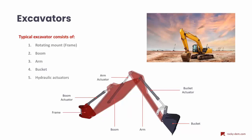Today we'll cover one common type of excavator, which usually consists of a rotating mounting frame or housing mounted over some displacement device, a boom and arm that together with actuators provide a mechanism to control the displacement of a bucket. This is the kind of equipment we usually simulate inside Rocky DEM.